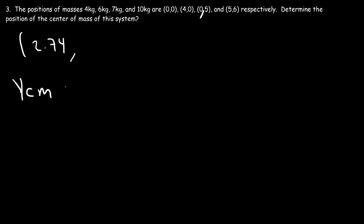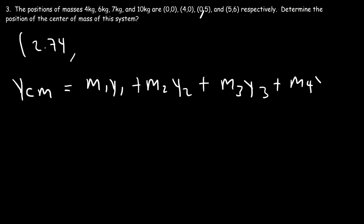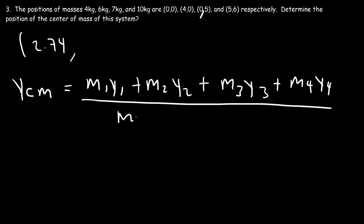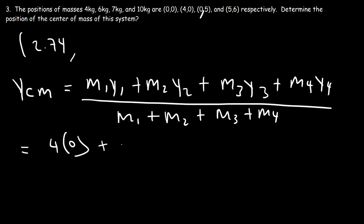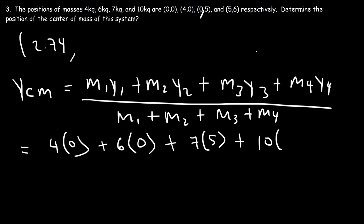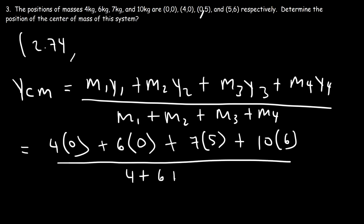Now let's do the same for the y-coordinate: it's m1·y1 plus m2·y2 plus m3·y3 plus m4·y4, divided by the total mass. Mass 1 (4 kg) is at y equals 0. Mass 2 (6 kg) has a y value of 0 as well. The 7 kg mass is at y equals 5, and the last one (10 kg) is at y equals 6. Then divide by the same total mass of 27.